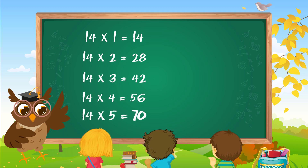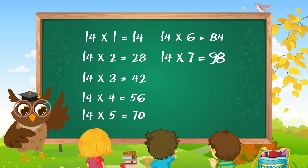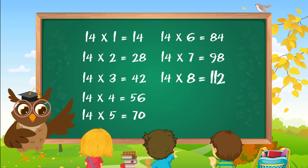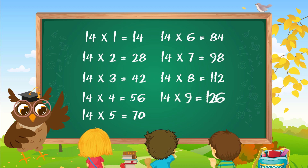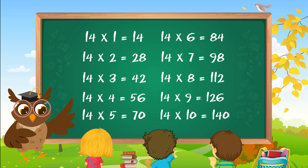14 fives are 70. 14 sixes are 84. 14 sevens are 98. 14 eights are 112. 14 nines are 126. 14 tens are 140.